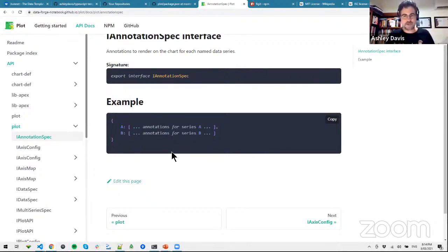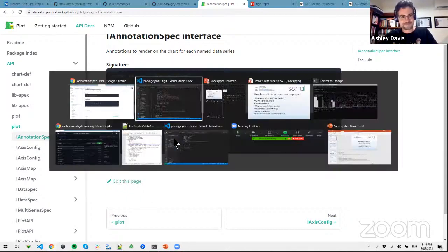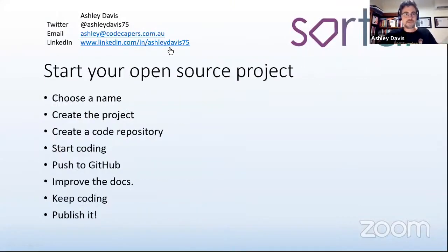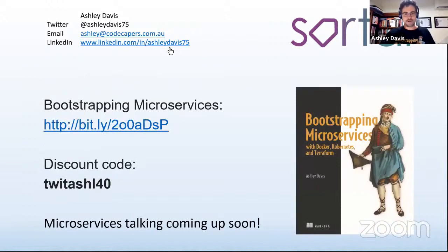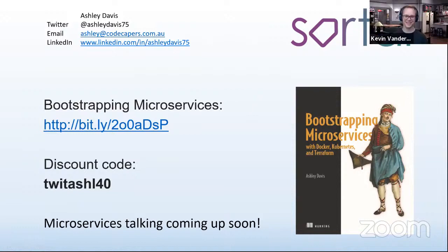Just to wrap up, the list of things to start your own project: choose a name, create your initial project, create a local code repository, do some coding, push it to GitHub — it's open source at that stage — work on your docs, keep coding and publish it, then just iterate: keep coding, publish it, keep coding, publish it. If you want a copy of my book, there's a link and a discount code for 40% off. Next month I'll be giving away some free copies. Thank you for listening.